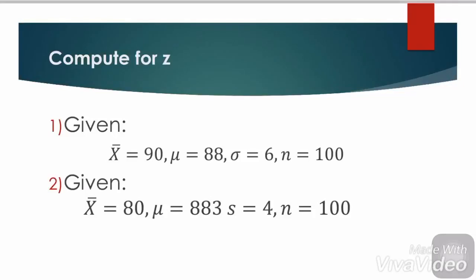Let's try solving for our test statistic Z. For number one, the given is sample mean x̄ = 90, population mean μ = 88, standard deviation σ = 6, and the sample size n = 100.